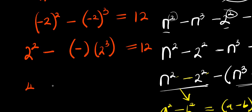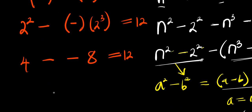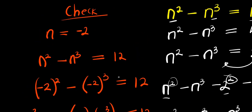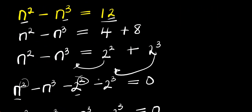2² is 4, minus minus — 2³ is 8. Minus times minus is plus, so this is 12 equals 12. So this solution has satisfied the equation, and this is how you can solve it step by step. Thank you and goodbye.